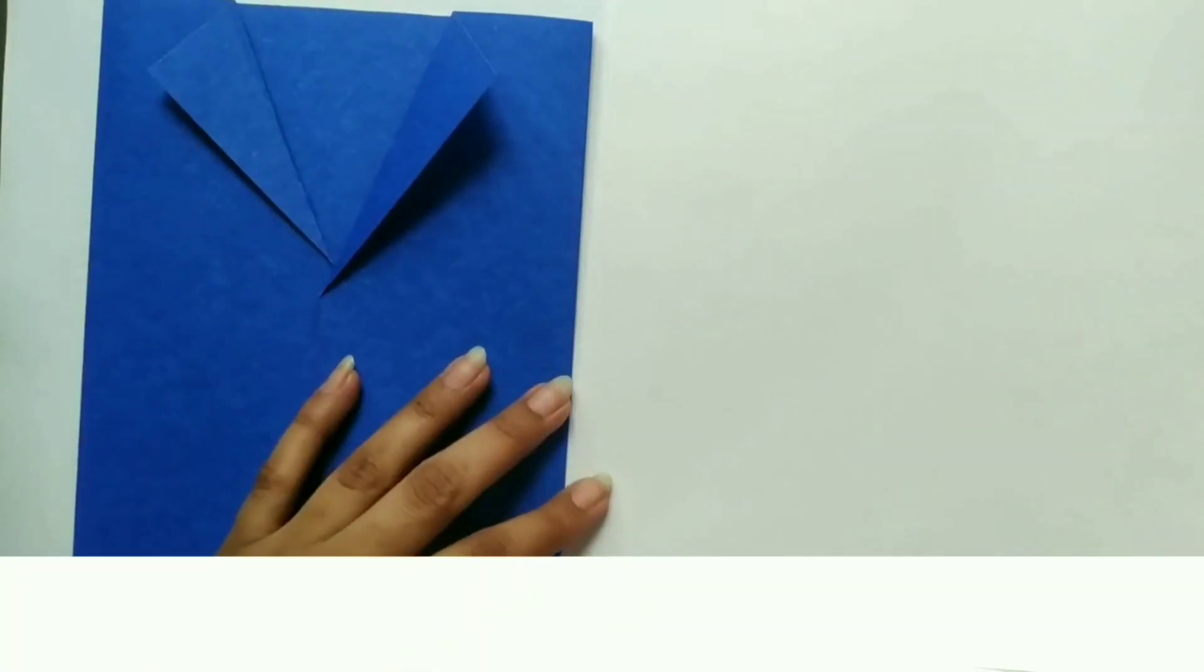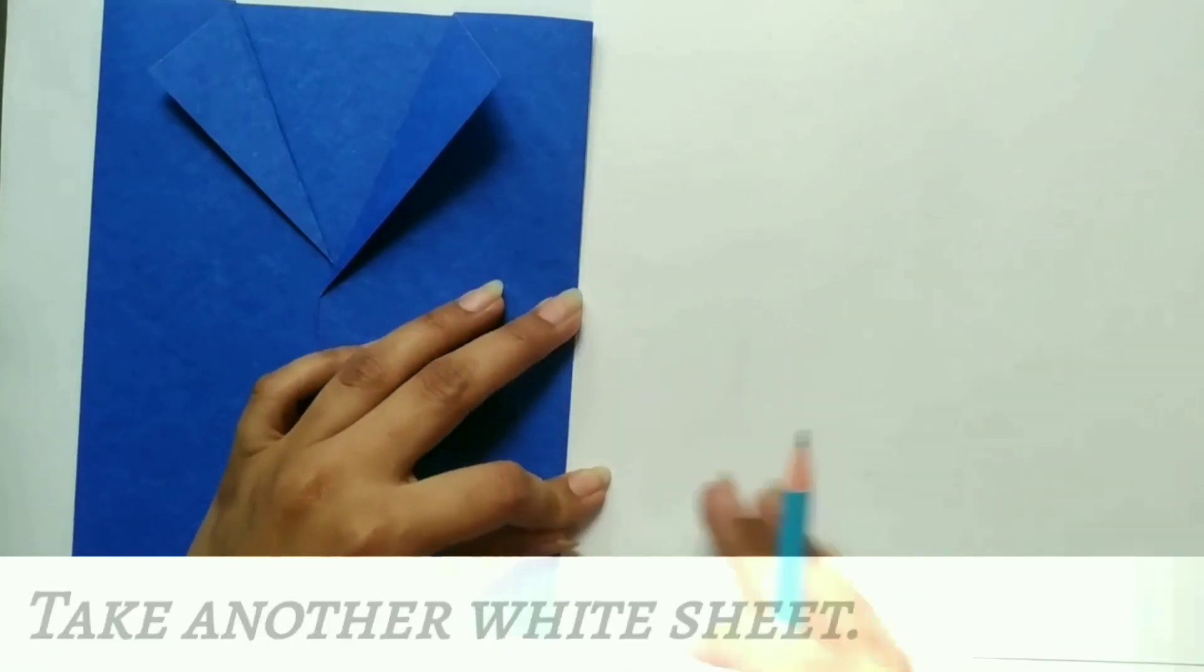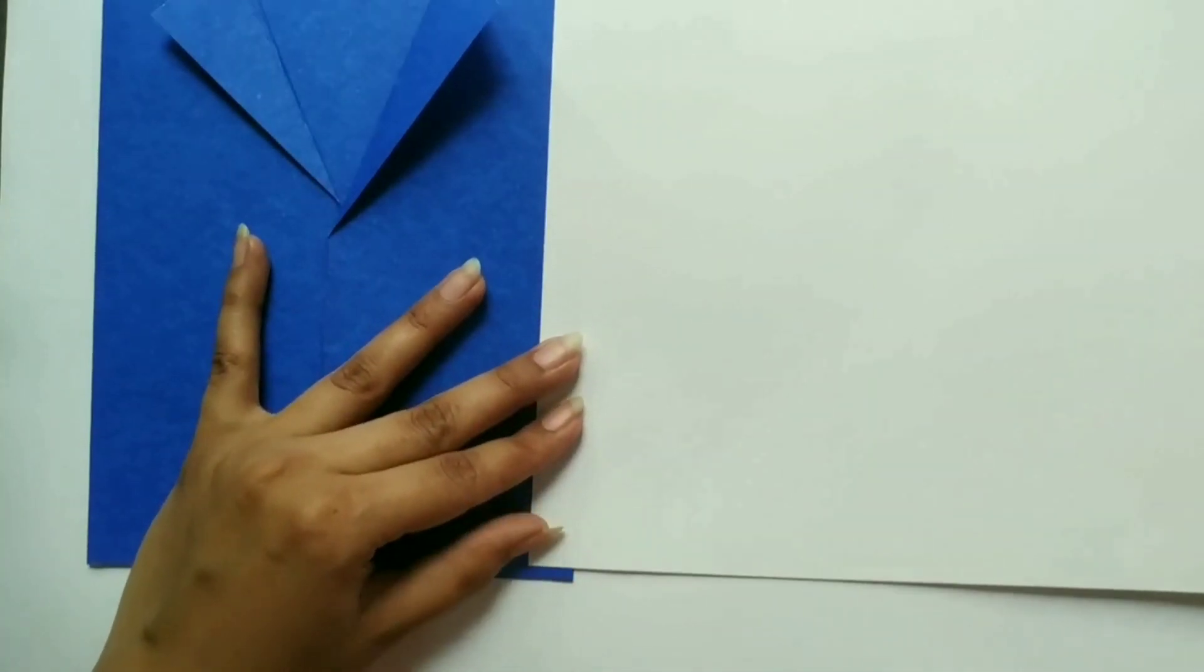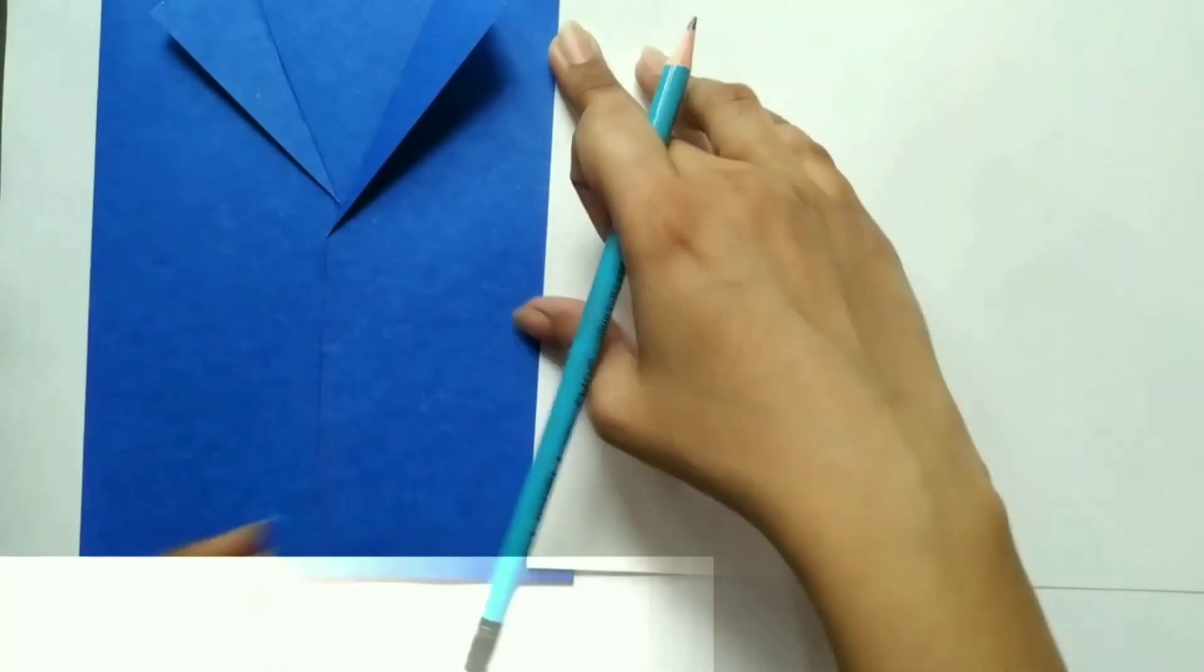Now, take another white sheet to make the shirt. Measure the sheet according to the size of the blazer and keep it slightly smaller.